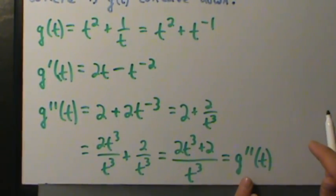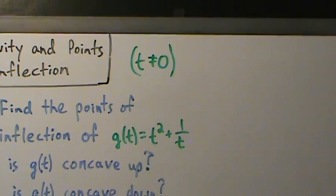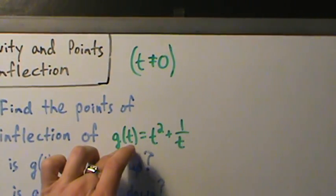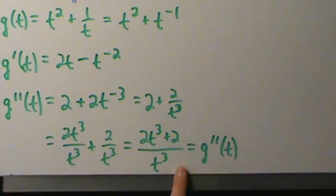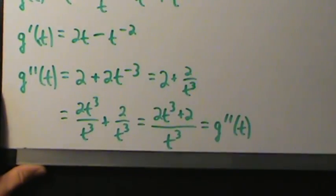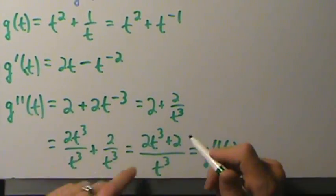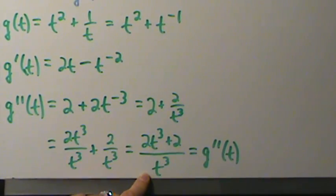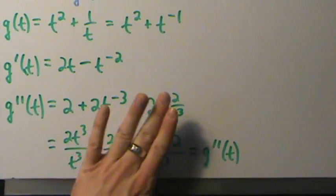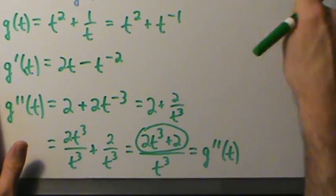Now, where is the second derivative zero and where is it undefined? It's undefined when we divide by zero, which happens when t equals zero — but t is already excluded from the domain of the original function, so we toss that out. The second derivative equals zero when the numerator is zero. So we set the numerator equal to zero: 2t cubed plus 2 equals 0, and solve for t.